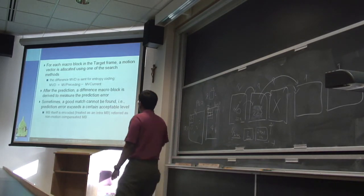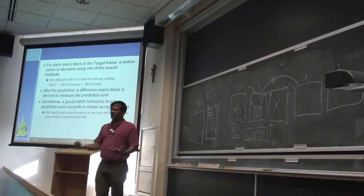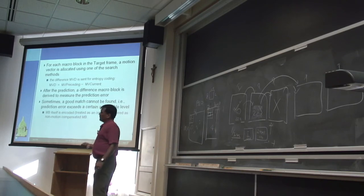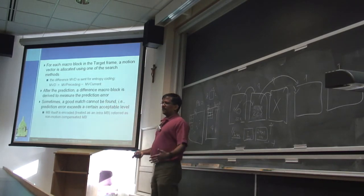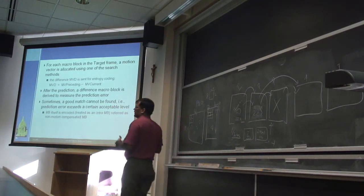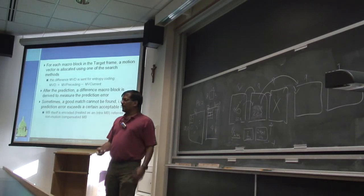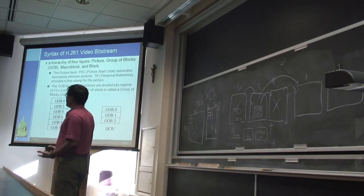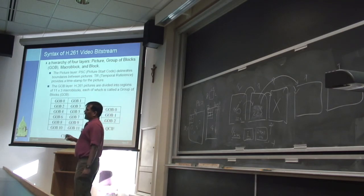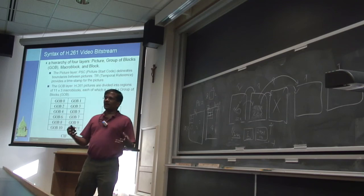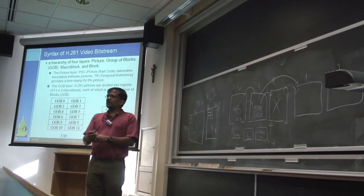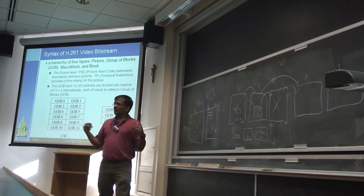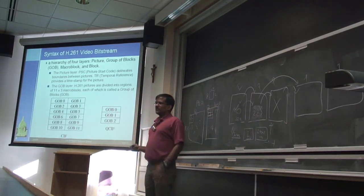You also encode the motion vectors as a difference from the previous motion vector, since things tend to move in the same direction, making those differences close to zero for better compression. Sometimes after doing all this, the resulting encoded size is bigger than just sending the frame directly, in which case you send it as a non-compensated frame — essentially like an I-frame. When sending as a stream, they group blocks into higher-level structures. We'll see how this helps when we get to MPEG-4. The idea is to get macro structure out of videos so that handling and selectively dropping them is easier.